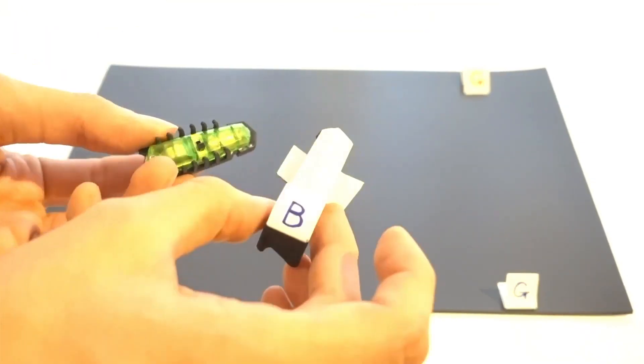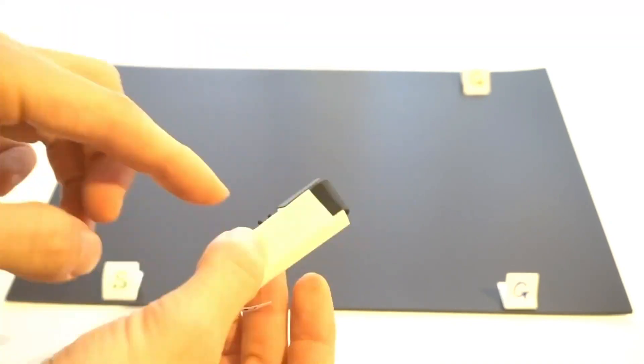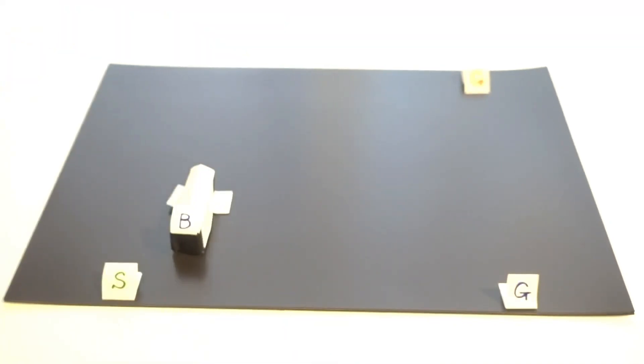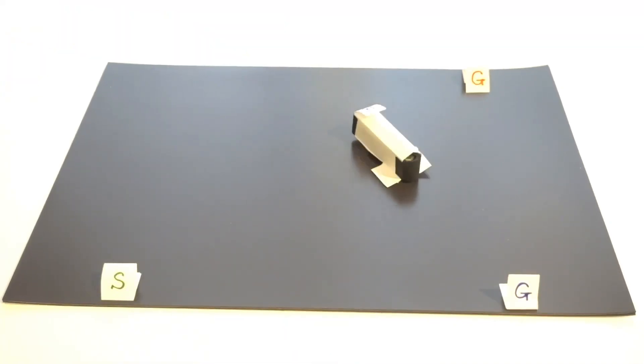Also, by changing the magnetic patterns at the tip of the robot, the robot traces a different path. This is an example of force field design.